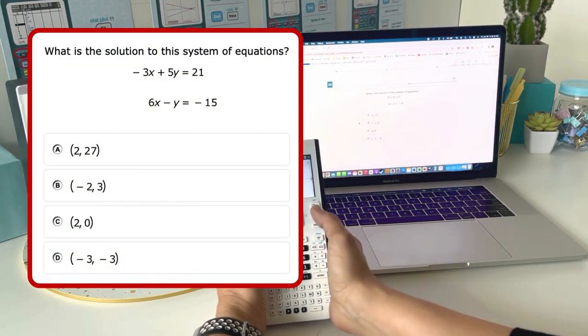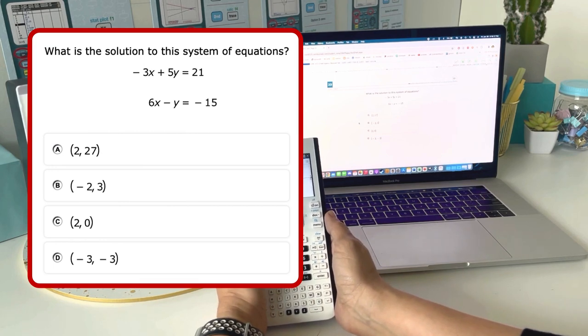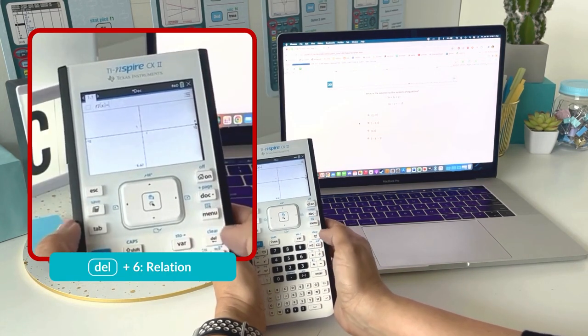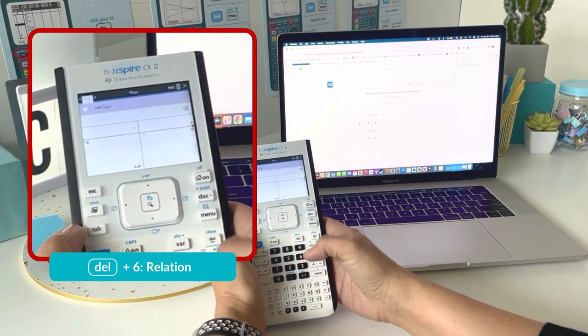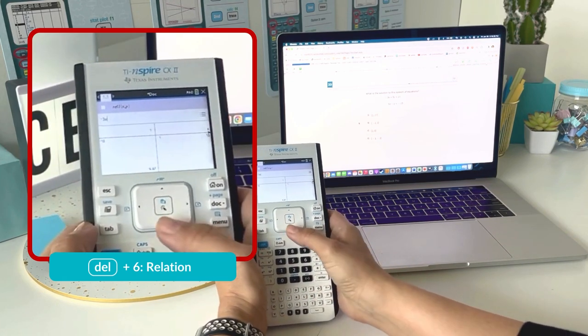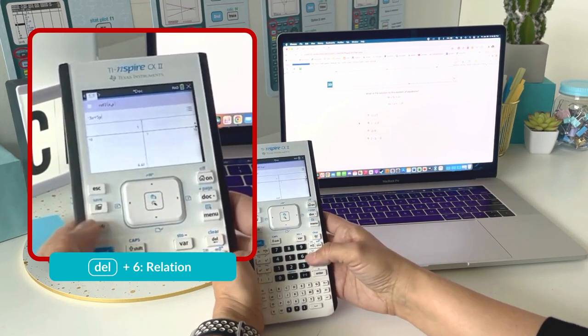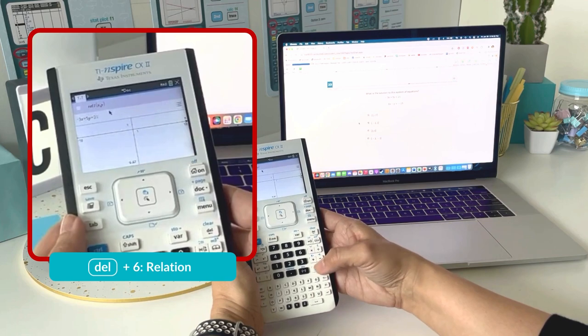Even though these equations are not given in slope-intercept form, I can type them in exactly as they're given. In the function line, hit delete and choose option six for relation. I'm going to type in negative 3x plus 5y equals 21, just as it's given, and hit enter.